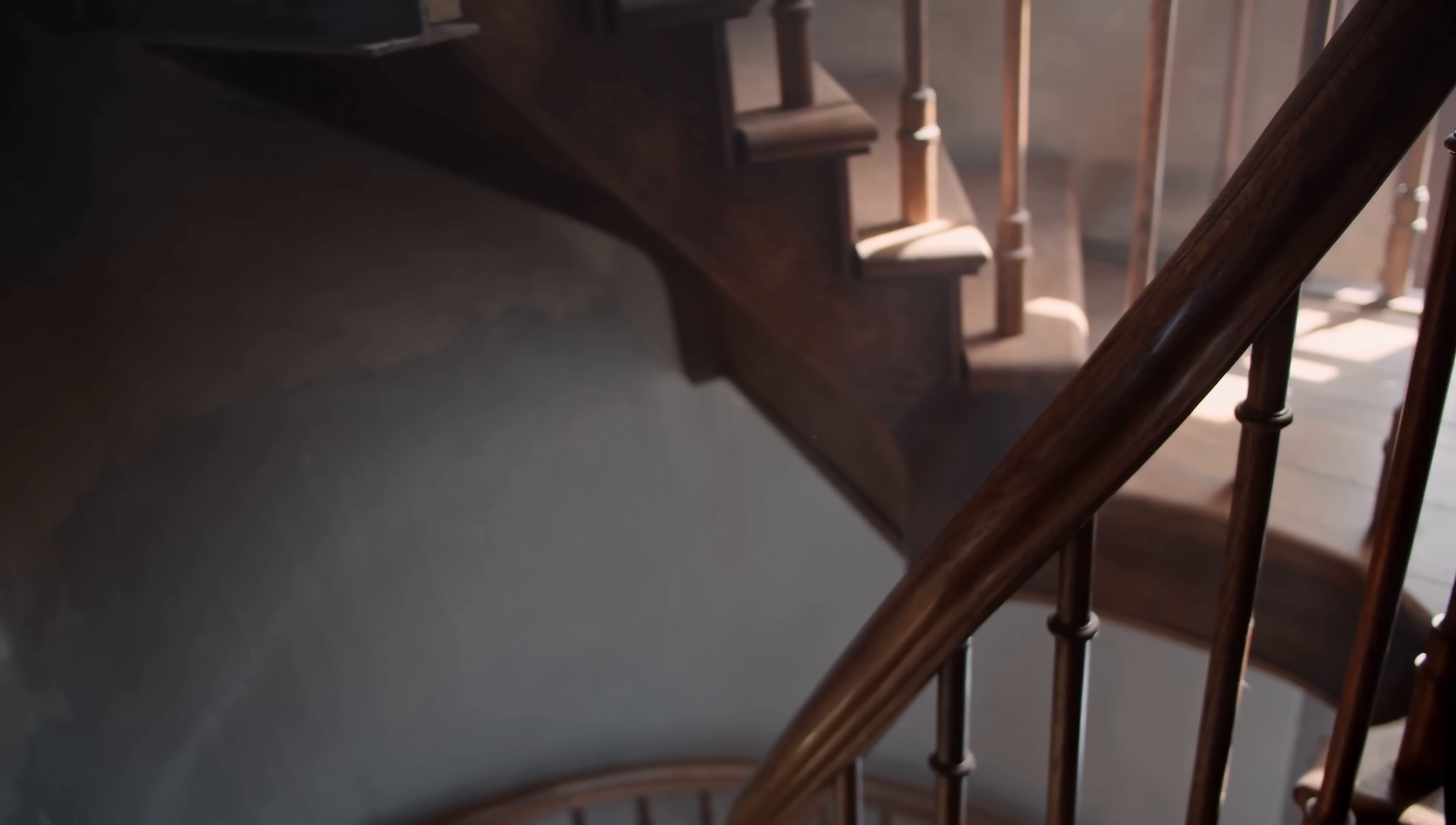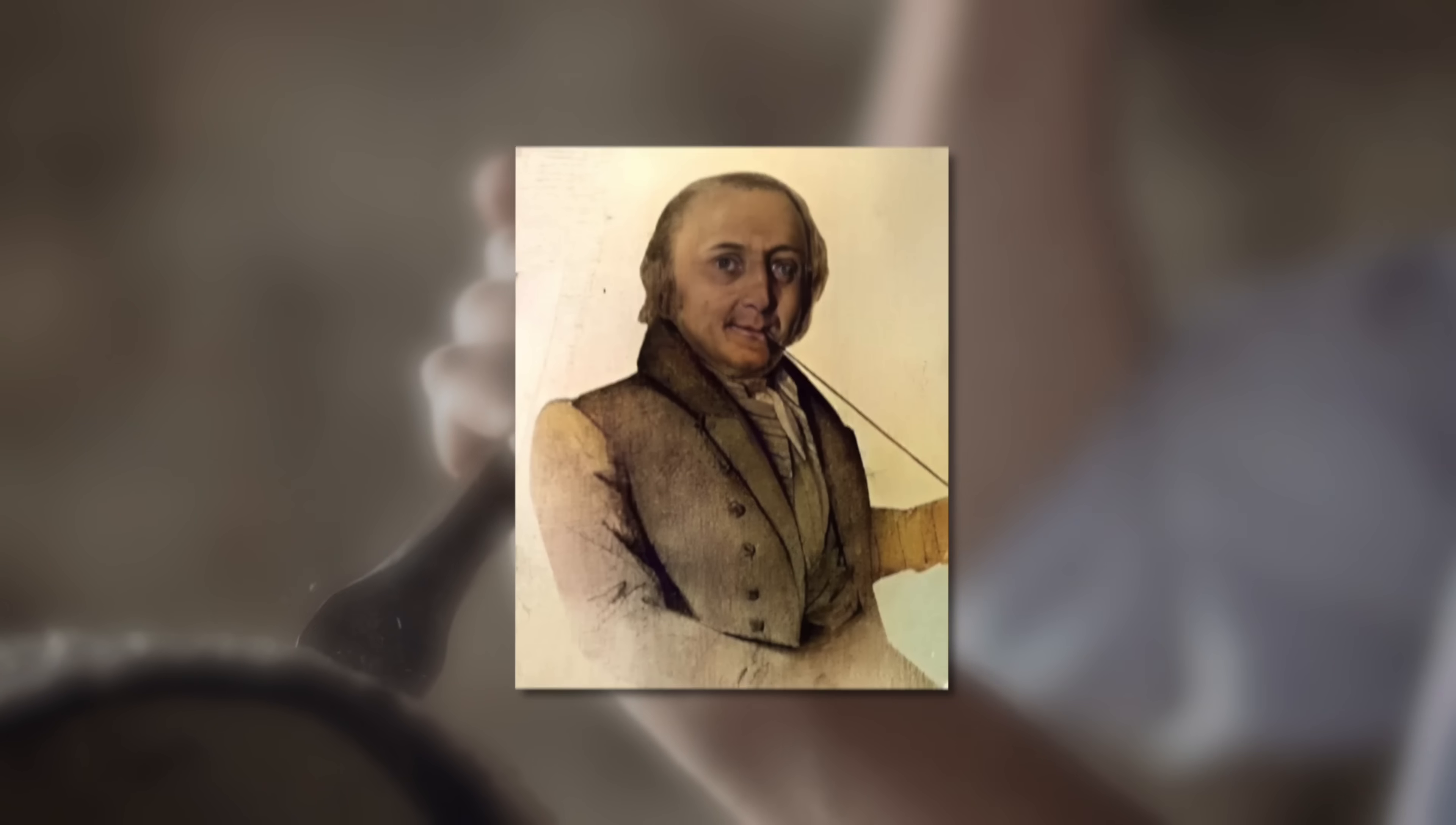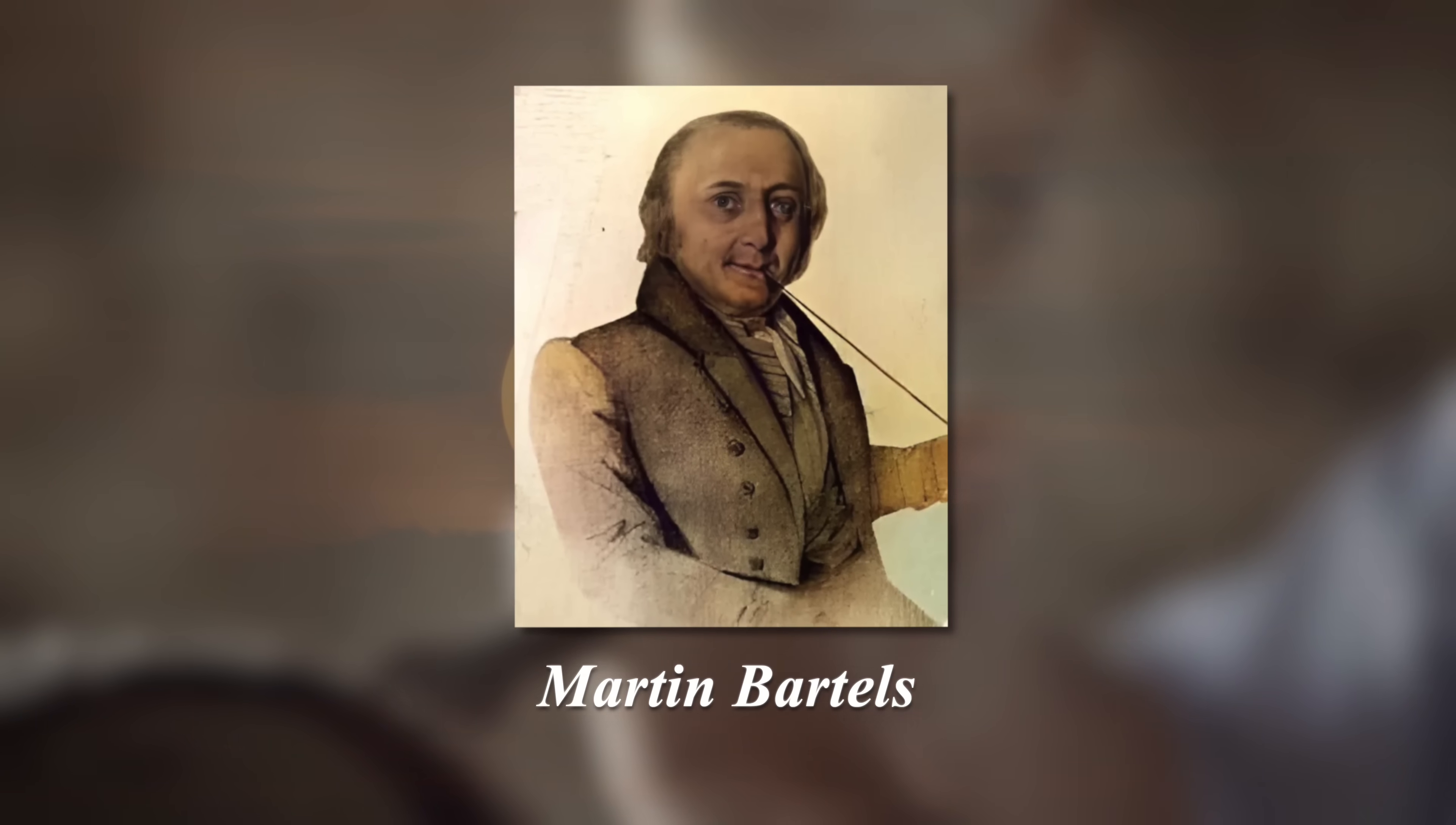The stunned teacher visited Carl's father to convince him his son needed to develop his abilities through advanced study. Carl's father valued manual labor and was reluctant, but he eventually agreed to let him study with Wüttner's assistant, Martin Bottles.